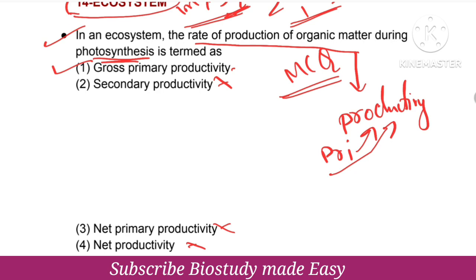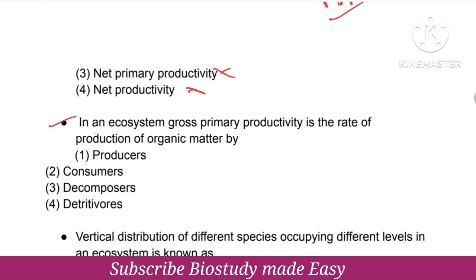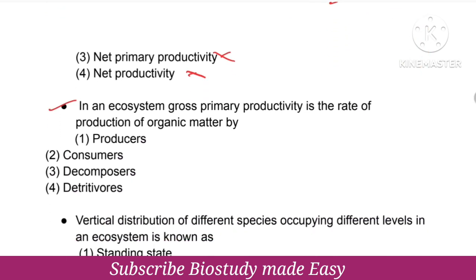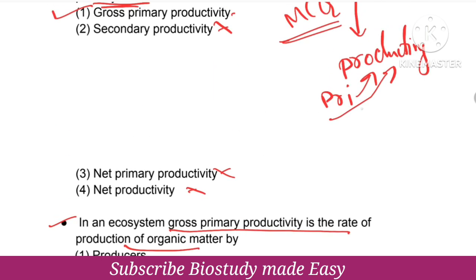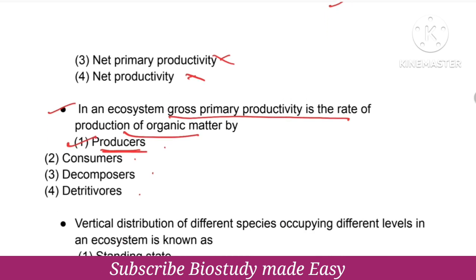Second question: In an ecosystem, gross primary productivity is the rate of production of organic matter by? The right answer is producers. Producers are the plants.